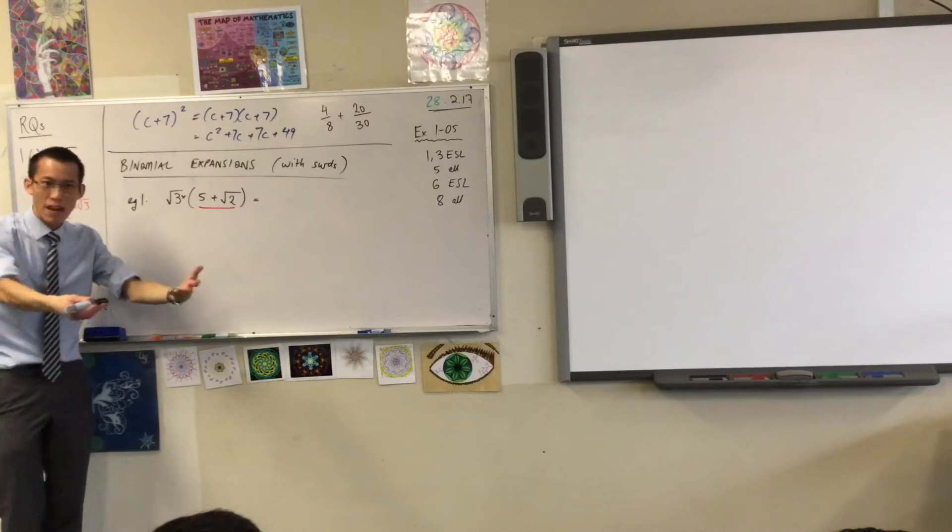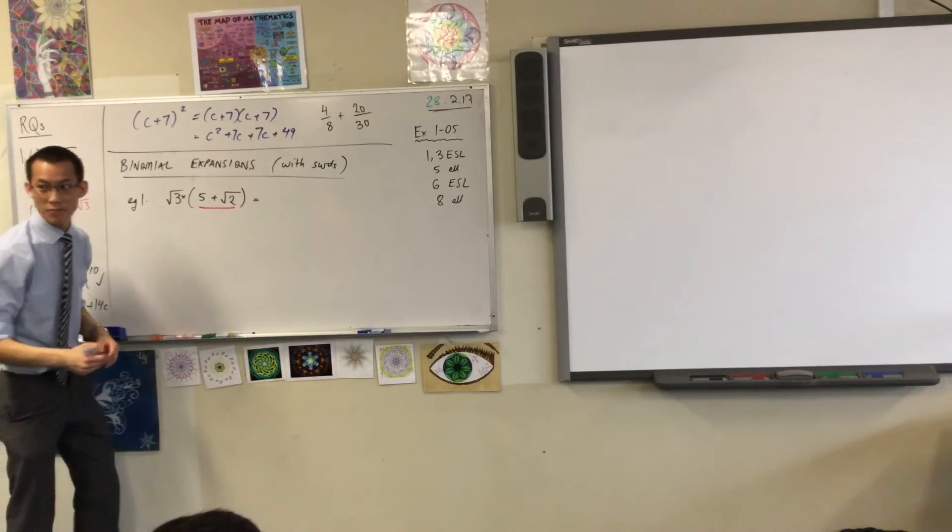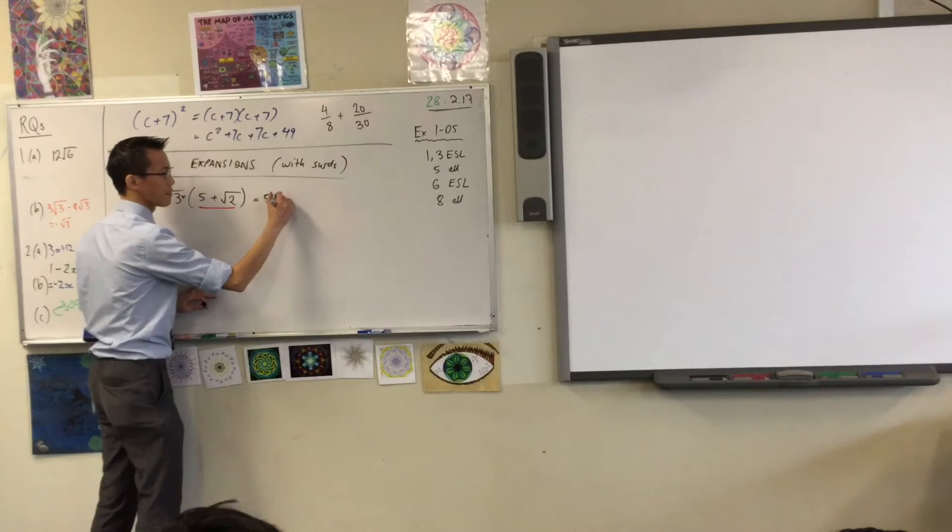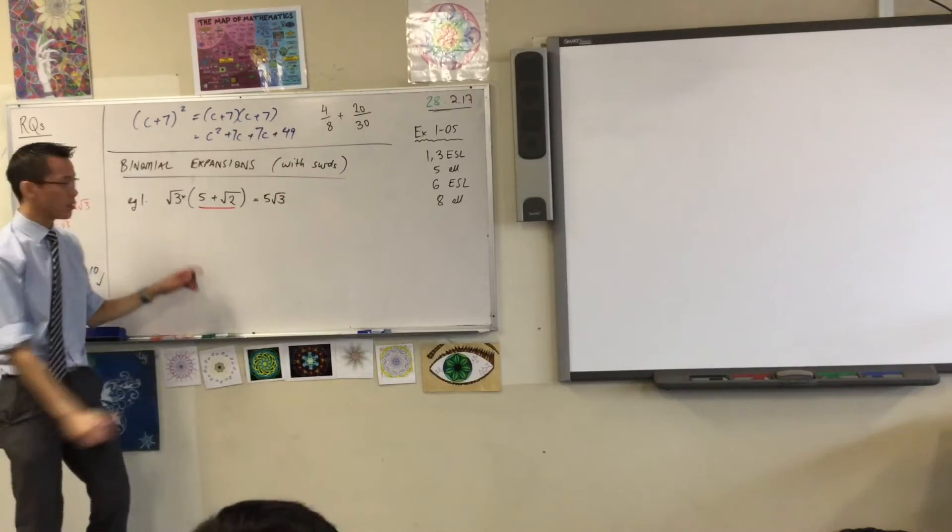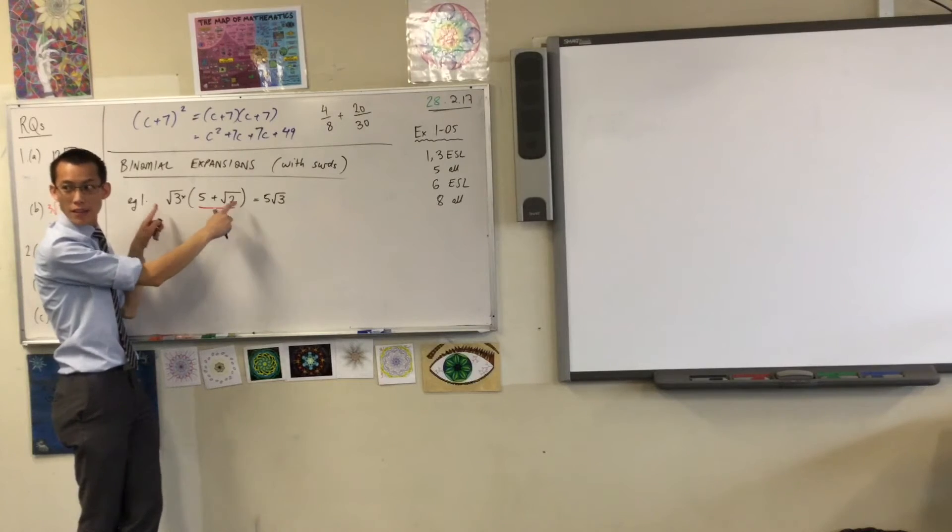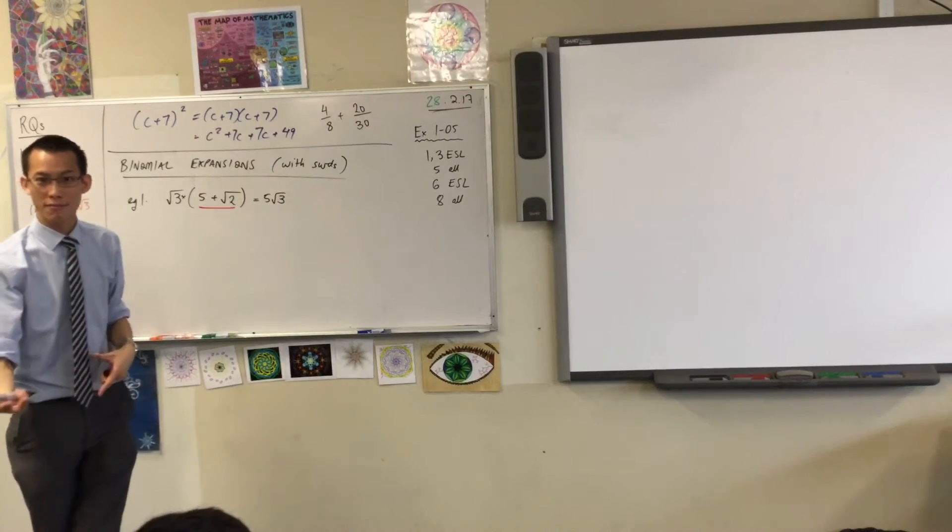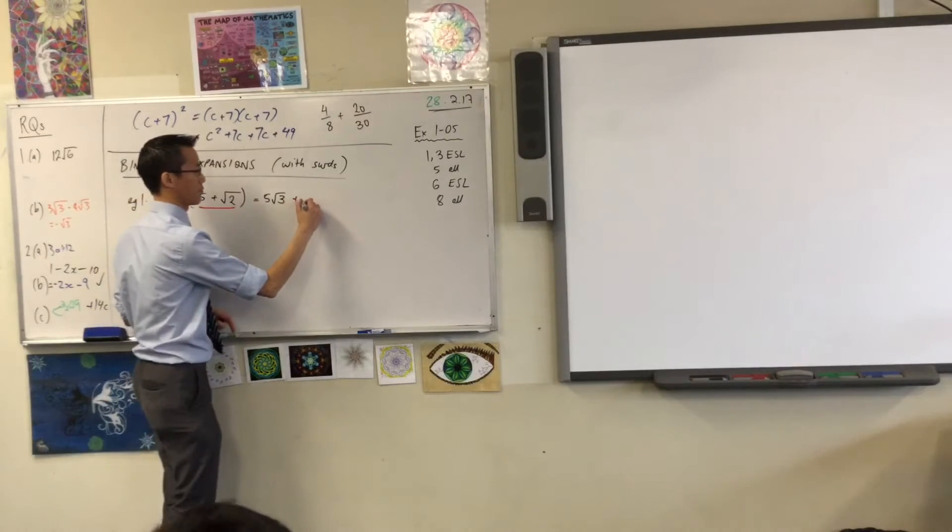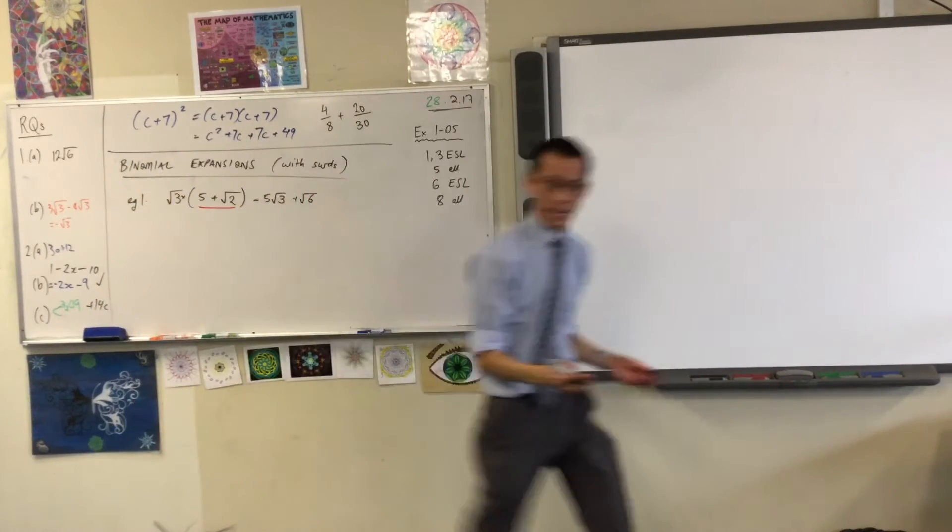So √3 times 5, how would you write that? 5√3. So far, so good. What about these? You know some surd laws now for how to deal with these. Rather than two, I can combine them into one surd, which is... 6. That's it. That was not complicated, was it?